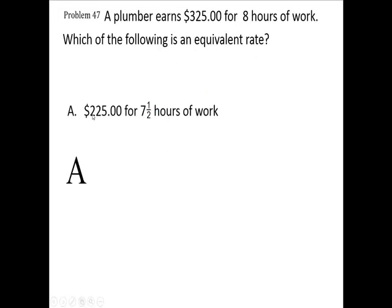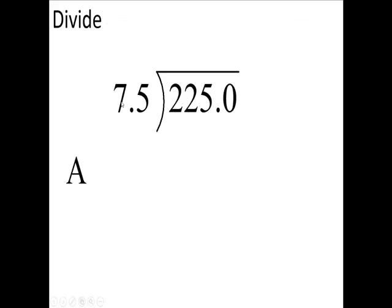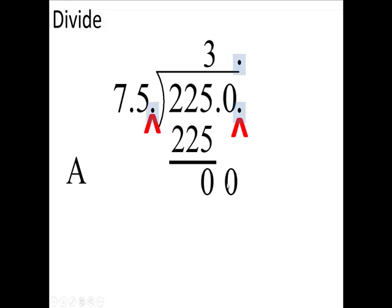Let's find out if this is going to give me $40 an hour. Take 225 and divide it by 7.5. We need to move the decimal over one place on both of these. So your decimal is going to go right up here. 225 divided by 75. 3 times 75 is 225. Subtract, bring down a 0. And this is $30 an hour. So this is not $40 an hour. We're going to throw out this answer.